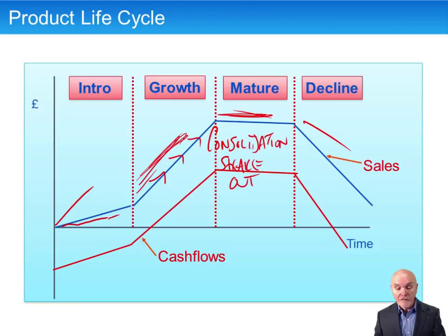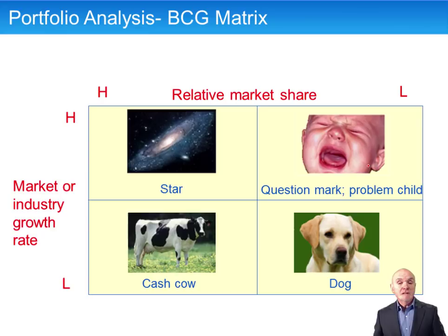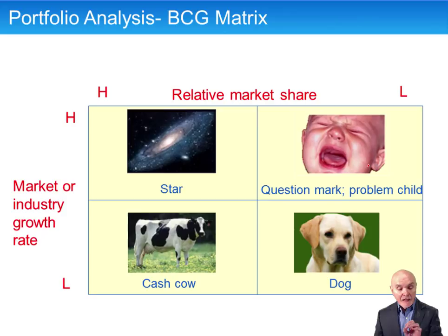The Boston Consulting Group Matrix — the BCG Matrix — is something you'll be familiar with. We'll go through the rationale quickly. There are some simplifications in it, but the idea is that if we can identify a product in one of these quadrants, this will give us some indication as to what to do with that product to try to improve performance.